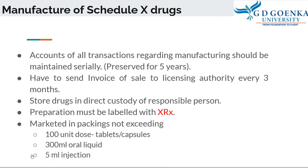Regarding the manufacture of Schedule X drugs: accounts of all transactions regarding manufacturing should be maintained serially by the manufacturer. The manufacturer should preserve these records for 5 years. They have to send an invoice of sale to the licensing authority every 3 months. They also have to store the drugs in the direct custody of a responsible person. Preparations must be labeled as XRX.